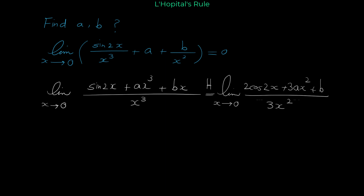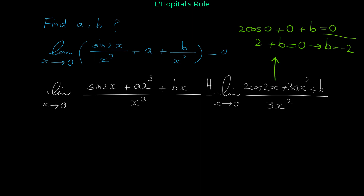Substituting 0 into the numerator: 2 cosine of 0 (since 2 times 0 is 0) plus 3a times 0 squared, which is 0, plus b must equal 0. Since cosine of 0 is 1, we get 2 plus b equals 0, so b equals negative 2. We have now found the value of b.